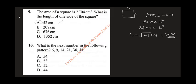Question 10 says: what is the next number in the following pattern? We have 6, then 9. Notice: 6 plus 3 gives 9. Then 9 plus 4 gives 13. Then 13 plus 5 gives 18. So the differences are 3, 4, 5 — the increment increases by 1 each time, meaning we add 2 more each step.